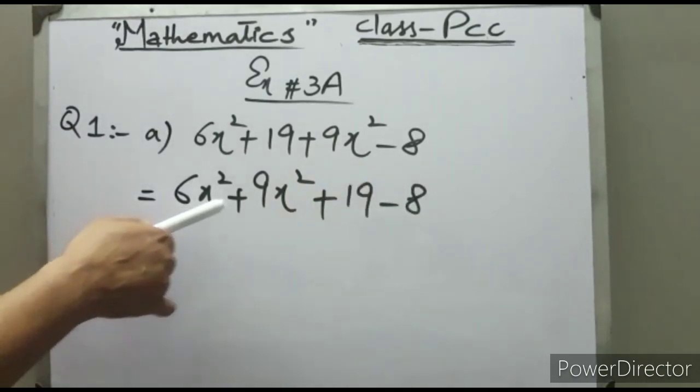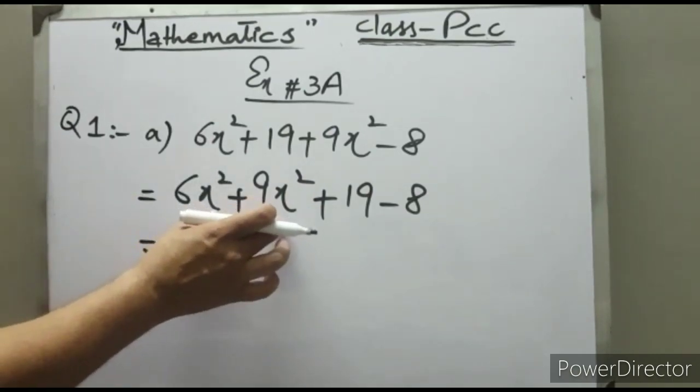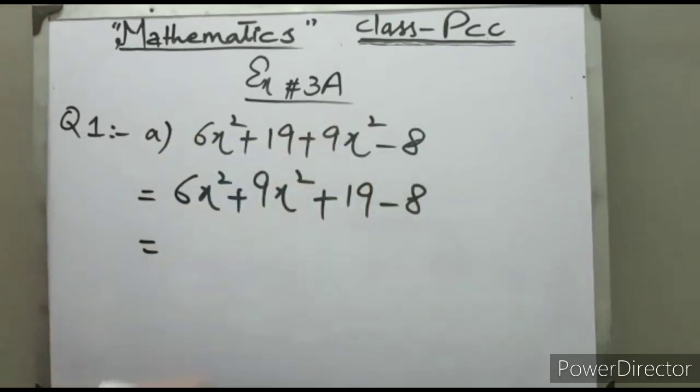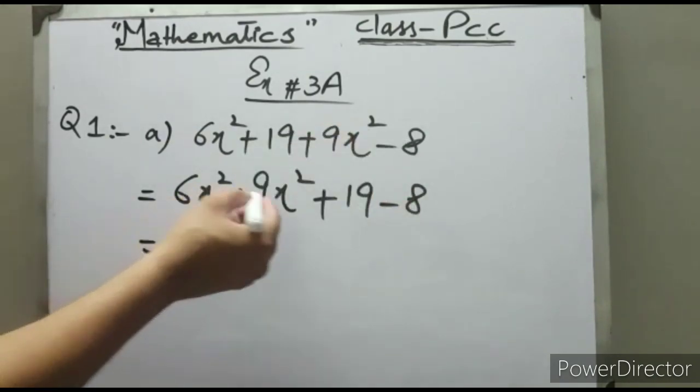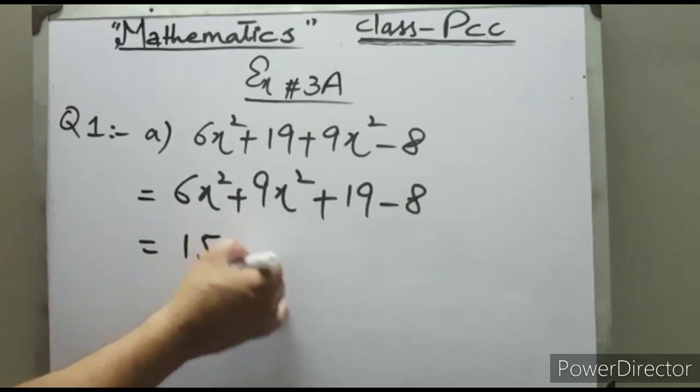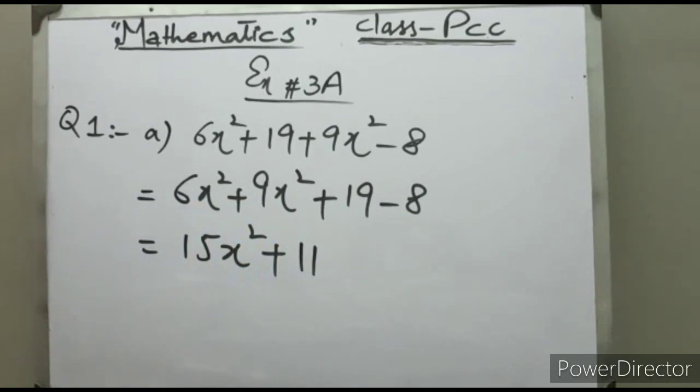6x² + 9x² + 19 - 8. You can see 6x² and 9x² are both like terms. Now you can add 9 plus 6. This will make 16x². 19 minus 8 is 11. So this is the simplification of this quadratic expression. Question number 2.